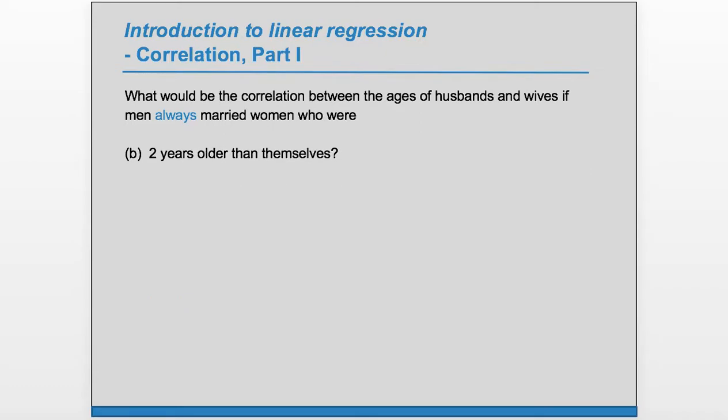Part b, two years older than themselves. So again, we have perfect linear relationship, and so we just need to know if it's positive or negative. Similarly, if we write out some of the example points.